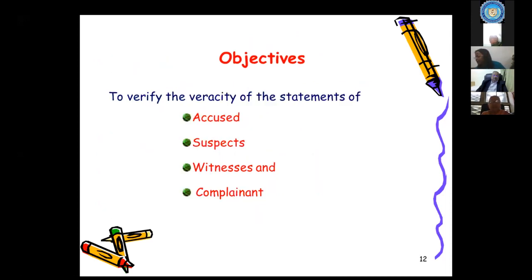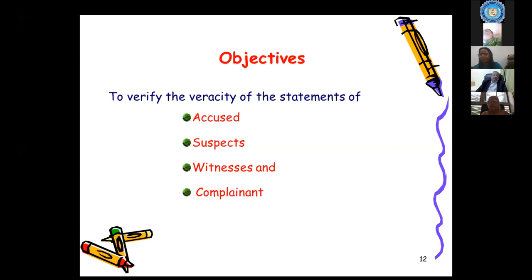The main objective of forensic psychological technique is to check the veracity of the statements of the accused, suspect, witness, and complainant. As a forensic scientist, there are many disciplines — biology, serology, document examination — but when the investigating officer is investigating a subject, the subject will give only testimony. With the help of forensic psychological technique, we can check the veracity of that statement of the accused, suspect, witness, and complainant.